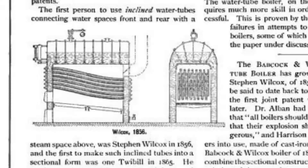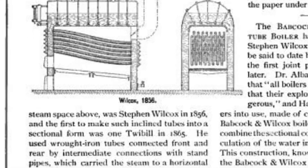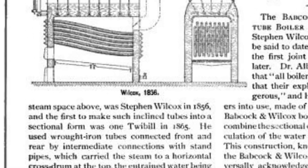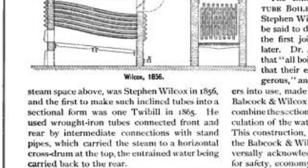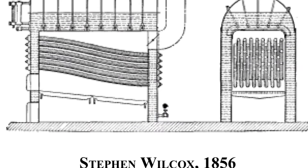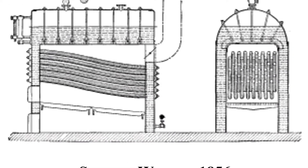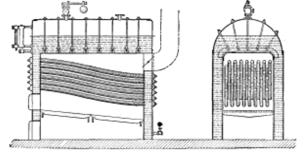Stephen Wilcox Boiler, 1856: This Wilcox design became the first water tube boiler to use an inclined pipe design. The tilted pipes connect the water spaces on the front and back with a steam room at the top. This boiler design later developed into the Babcock and Wilcox boiler design, which dominated the water tube boiler market in the late 19th to early 20th centuries.